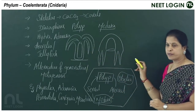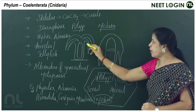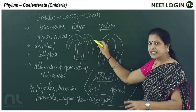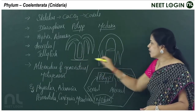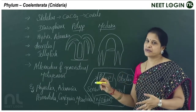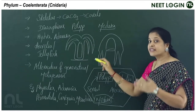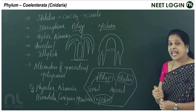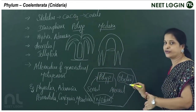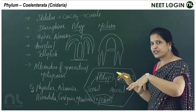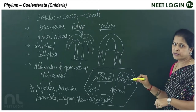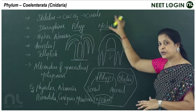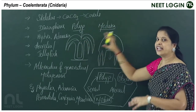Polyp forms like hydra and adamsia have a cylindrical body and are sessile, with the mouth oriented upwards. Medusoid forms like aurelia and jellyfishes are umbrella-shaped, free-swimming, with the mouth oriented downwards. Polyps are sessile with cylindrical bodies; medusae are free-swimming with umbrella-shaped bodies.